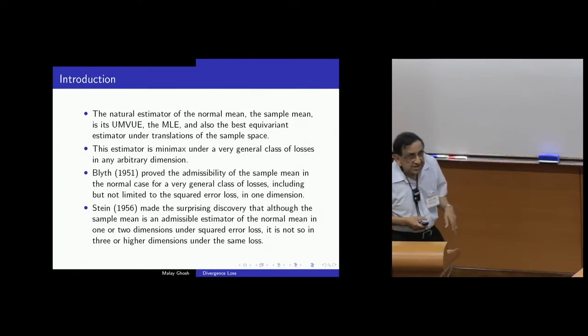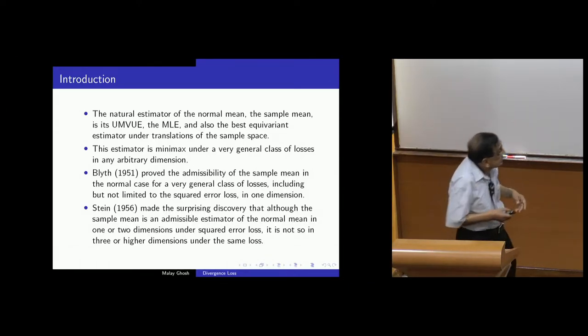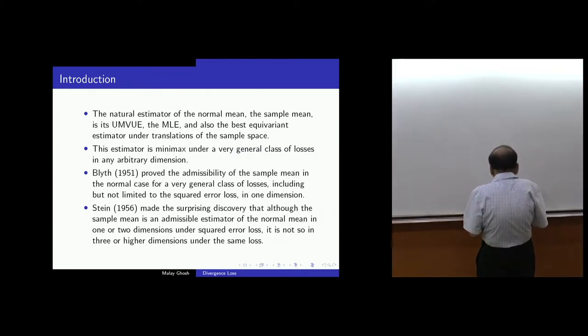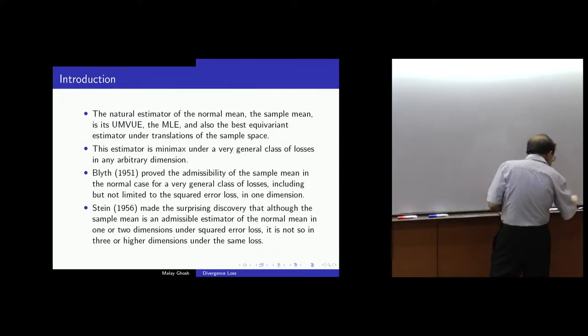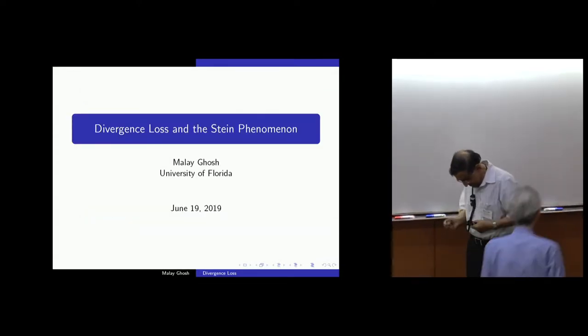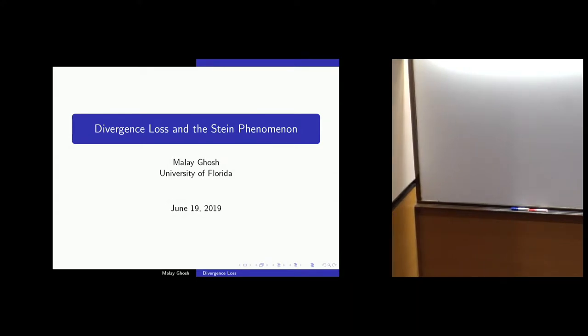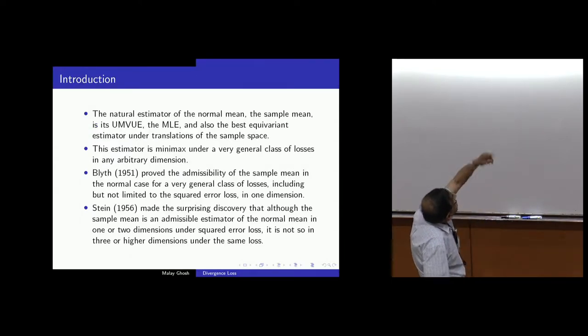So, just the history, the natural estimator, of course, is the sample mean. UMVU, MLE, best equivariant, et cetera. The minimax, under a very general kind of loss. Symmetric, bowl-shape loss, that kind of thing. It was actually first addressed in the PhD dissertation of Colin Blythe, under Lehman. The minimaxity was proved, and Blythe proved admissibility. For the normal case, for the general class of losses, which I just pointed out, including, but not limited to squared error loss.